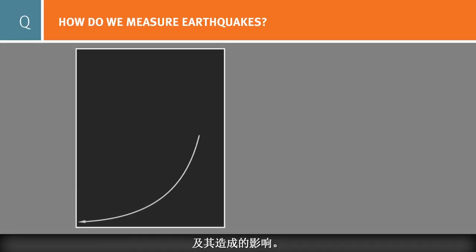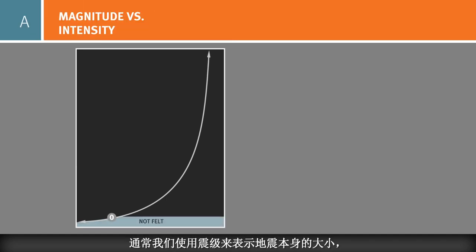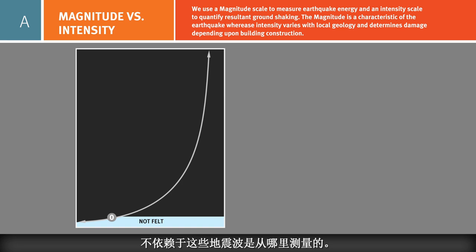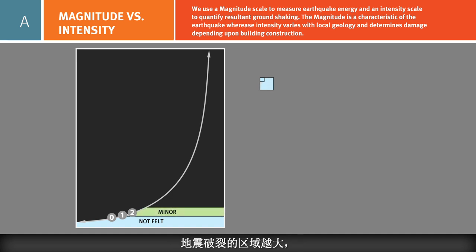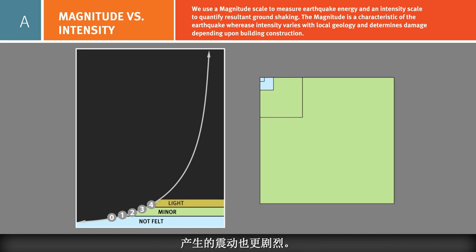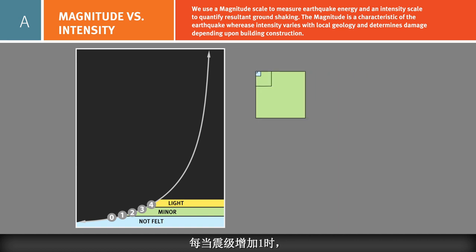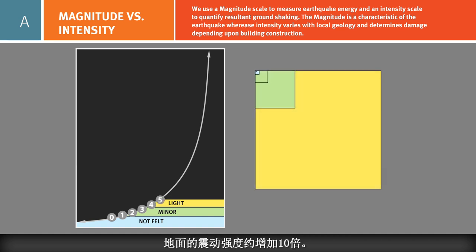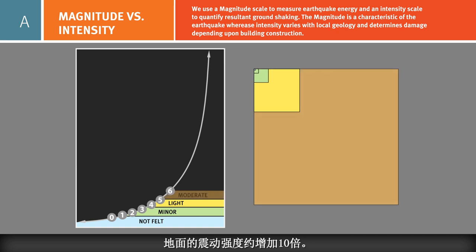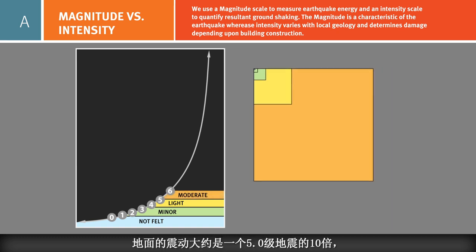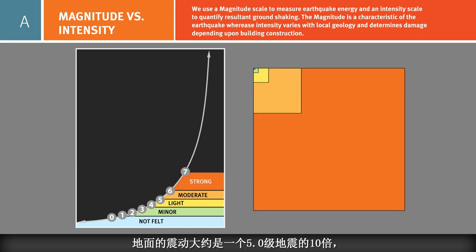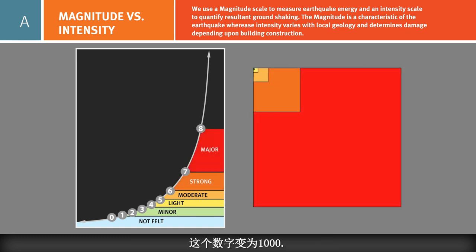Methods for measuring earthquakes quantify earthquakes and their effects. The magnitude scale measures the size of different earthquakes, independent of where the seismic waves are recorded. The larger the magnitude, the larger the offset and the area of fault that moved in the earthquake. For large earthquakes, the shaking is stronger and lasts for a longer time than for small ones. Each whole number step in earthquake magnitude represents an increase in amplitude of ground motion by a factor of 10. In a magnitude 6 earthquake, the ground shakes 10 times as much as in a magnitude 5, and in a magnitude 8, the ground shakes 1000 times stronger than in a magnitude 5.